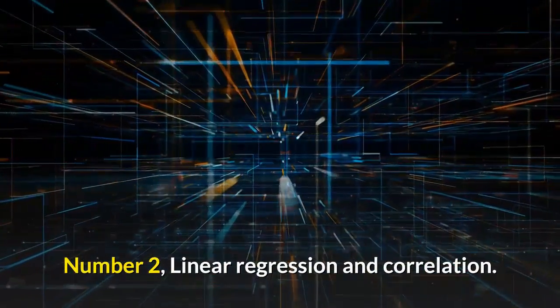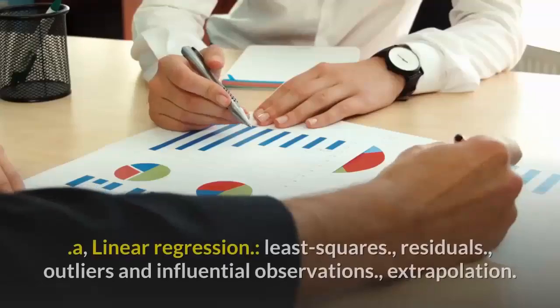Number 2. Linear regression and correlation. And under number 2, we have A. Linear regression.